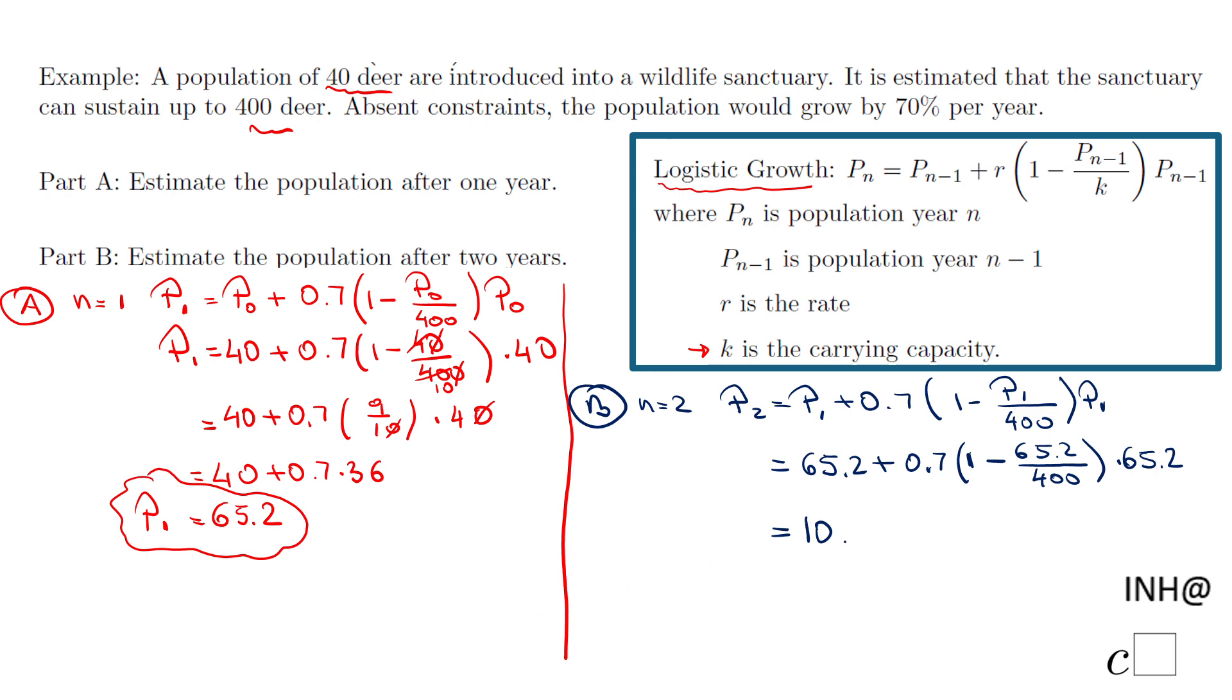I think it makes more sense to say 103 deer at the end of the second year.